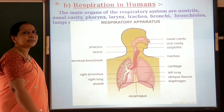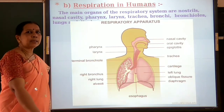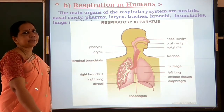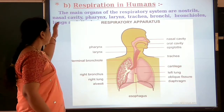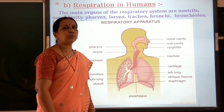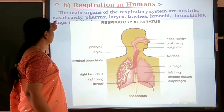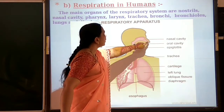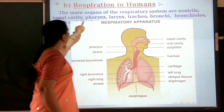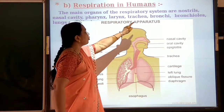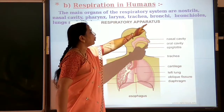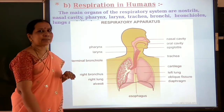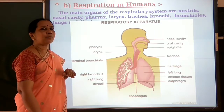Now let us discuss the human respiratory system — its parts and functions. The main organs of the human respiratory system are: nostrils, nasal cavity, pharynx, larynx, trachea, bronchi, bronchioles, lungs, and air sacs or alveoli.